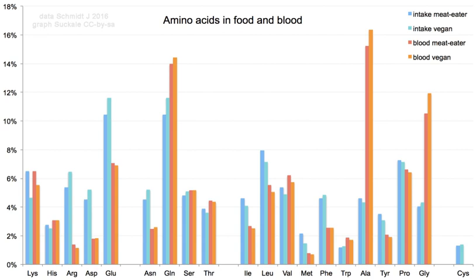When taken up into the human body from the diet, the 20 standard amino acids either are used to synthesize proteins and other biomolecules or are oxidized to urea and carbon dioxide as a source of energy. The oxidation pathway starts with the removal of the amino group by a transaminase; the amino group is then fed into the urea cycle. The other product of transamination is a keto acid that enters the citric acid cycle. Glucogenic amino acids can also be converted into glucose through gluconeogenesis.